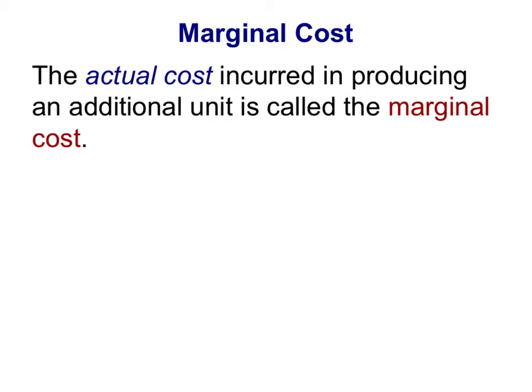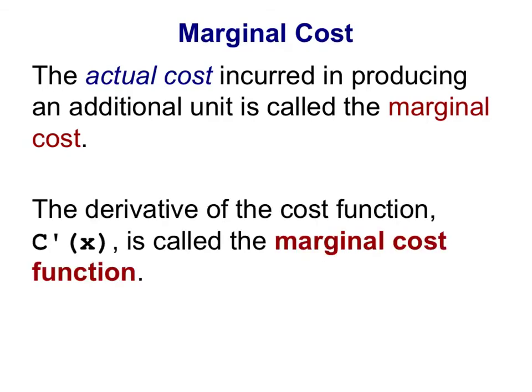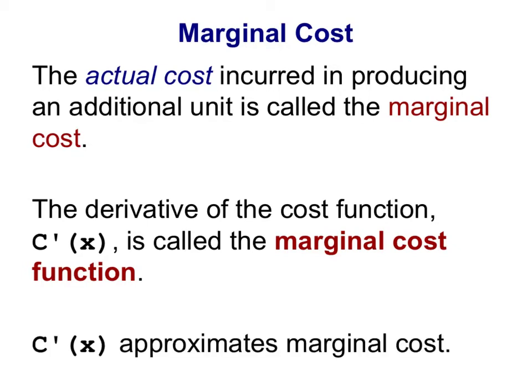Let me introduce you to marginal cost. The actual cost incurred in producing an additional unit is called the marginal cost. For us, that was the value of $313.91 that we calculated for the 201st widget. The derivative of the cost function, C'(x), is called the marginal cost function. And this derivative, C'(x), approximates the marginal cost, which is exactly what we noticed when we figured out the rate of change to be $314 at a production level of 200.